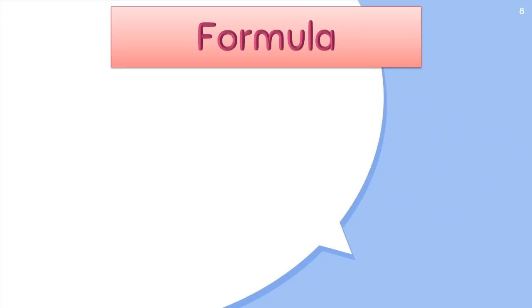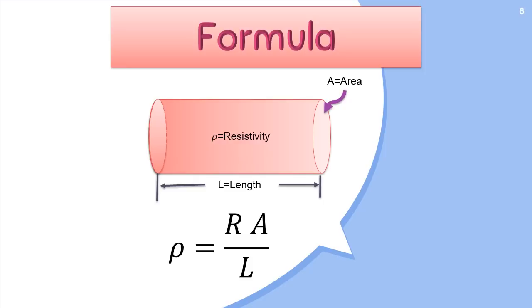Let's understand it through this relation. Here, the electrical resistivity rho is equal to R into A divided by L, where L is the length of the specimen, R is the electrical resistance of a uniform specimen of the substance, and A is the size of the specimen's cross-section area.